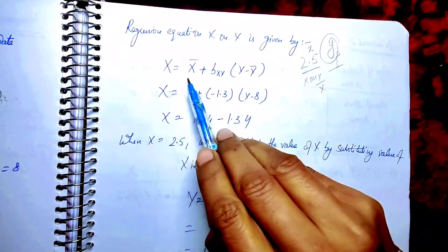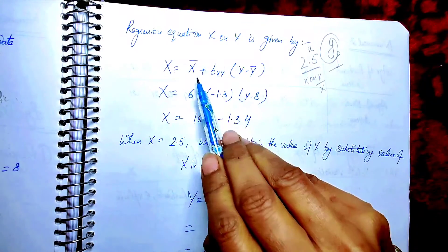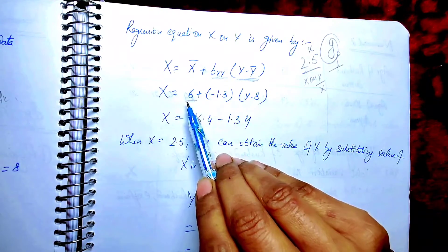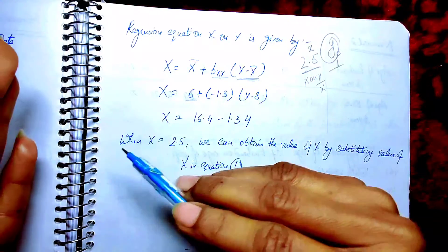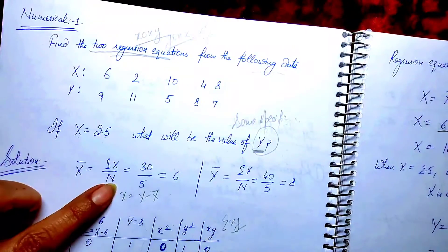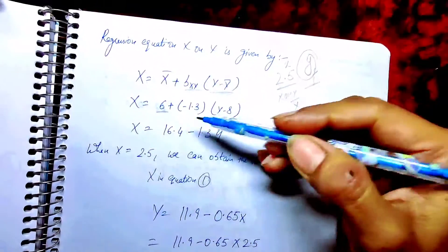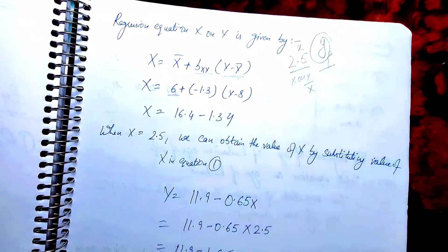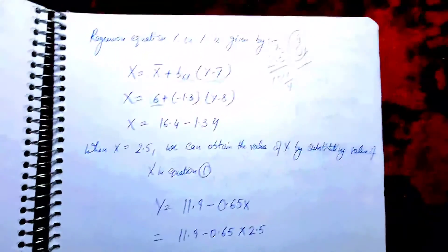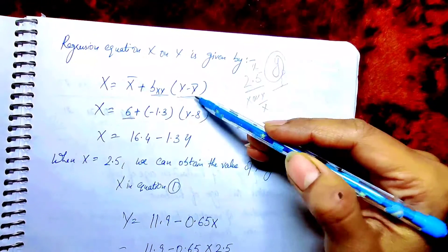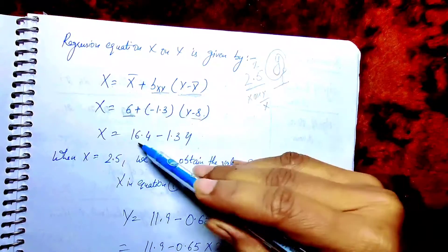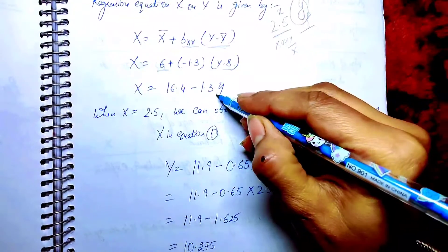Now we form the regression equations. Since x is given (x = 2.5), we need to find y, so we use the x on y equation. The equation for x on y is: x = x-bar + b_xy(y minus y-bar). Substituting x-bar = 6, b_xy = -1.3, and y-bar = 8, this gives us: x = 6 - 1.3(y - 8), which simplifies to: x = 16.4 - 1.3y.